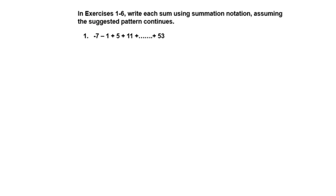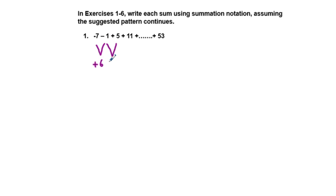To check out the pattern: to get from negative 7 to negative 1, we add 6. To get from negative 1 to 5, we add 6. So our pattern — to continue the pattern — we would add 6 each time to get to the subsequent next higher term.